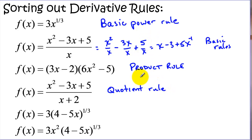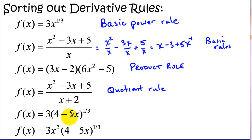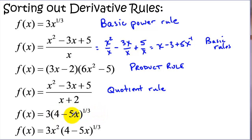Now there are other tutorials covering all these rules if you need help on finding those derivatives. Recently we've worked on the chain rule or the generalized power rule. Remember on this we have instead of just an x to a power, we have an expression to a power. The rule is similar in that we take this exponent times the coefficient in front, leave the expression under the exponent the same, subtract one from this exponent, but then we have to multiply that derivative by the derivative of the inside function — that's our chain rule or generalized power rule.